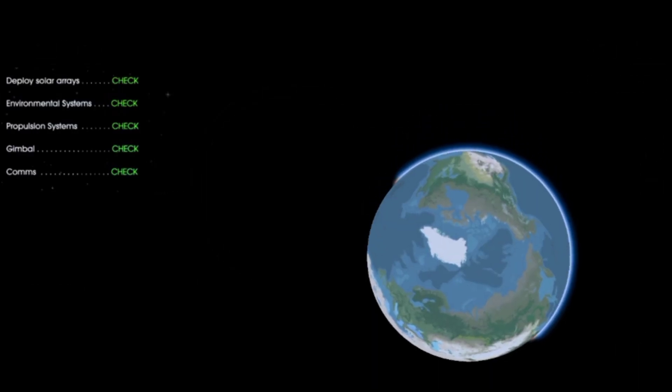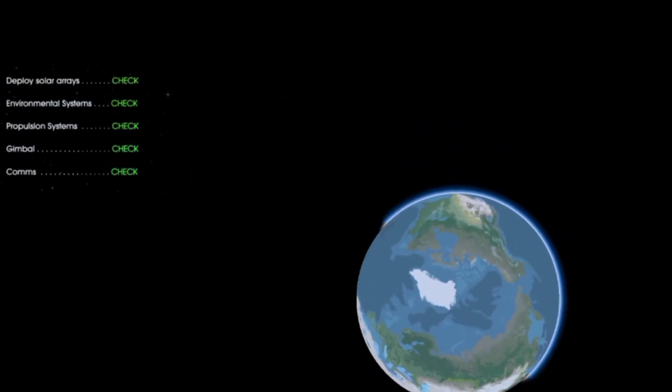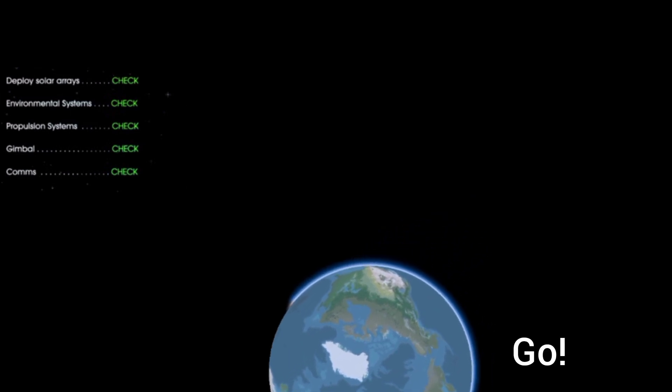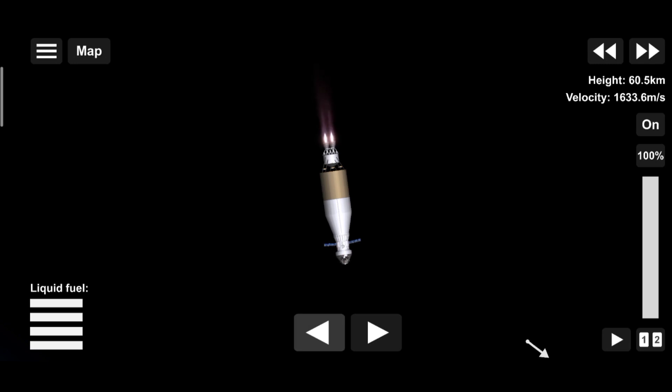Here, the crew reconfigure the spacecraft and check systems to confirm everything is ready for deep space travel. With a go from mission control, the crew reignite the exploration upper stage engines to leave Earth entirely.